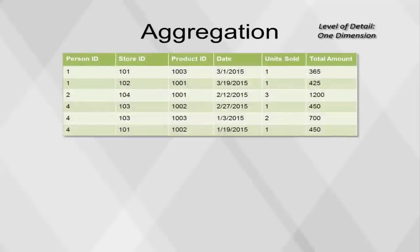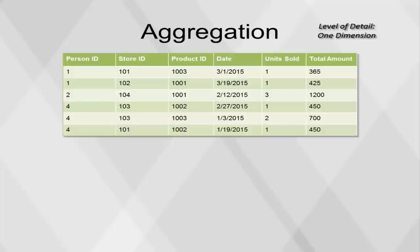The next questions are related to aggregating one dimension at a time and can be calculated in one step. For each of the questions, the original table is grouped by the dimension of interest — either the person ID, store ID, product ID, or date. For each value of the dimension chosen, calculations are performed using the measures, the number of rows, and the number of distinct IDs. A new data table is the result of these calculations.